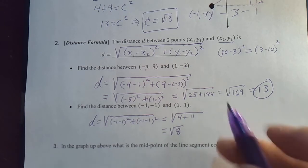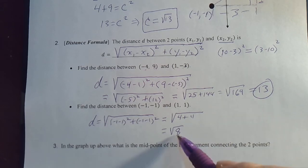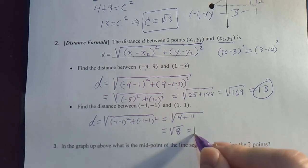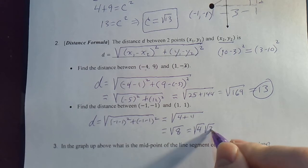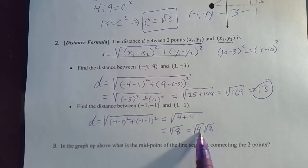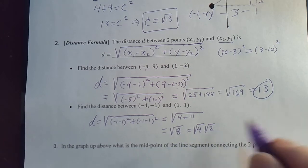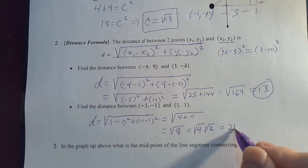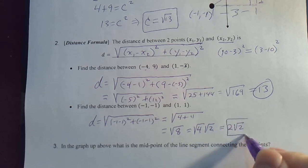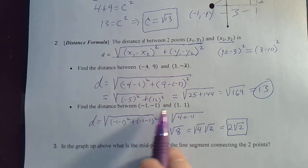And we like to simplify our radicals. 8 is not a perfect square, but there is a perfect square inside of 8 as a factor of 8. 4 is the perfect square. So, we write radical 8 equals radical 4 times radical 2. And this is 2. 2 radical 2. That is the distance between these two points.